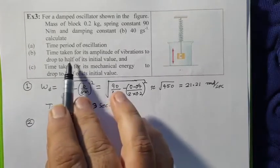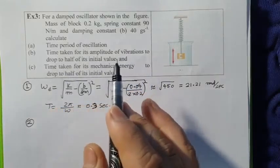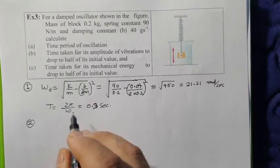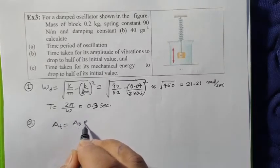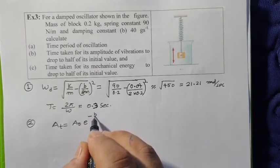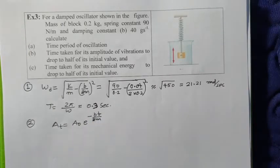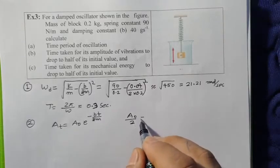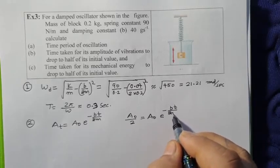Second, time taken for its amplitude of vibration to drop to half of its initial value. The question is what is A_t? So A_t is A_0 e to power minus bt by 2m. We have half to do, so how much we put? A_0 by 2, that is A_0 e to power minus bt by 2m.